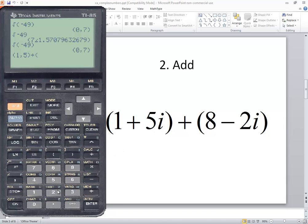Plus, beginning parentheses, eight, comma, negative two, closing parentheses. Then press enter. Now how you interpret this, this says nine plus three i, and that's our answer.